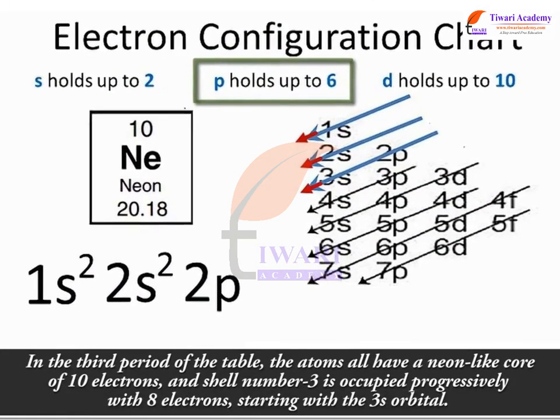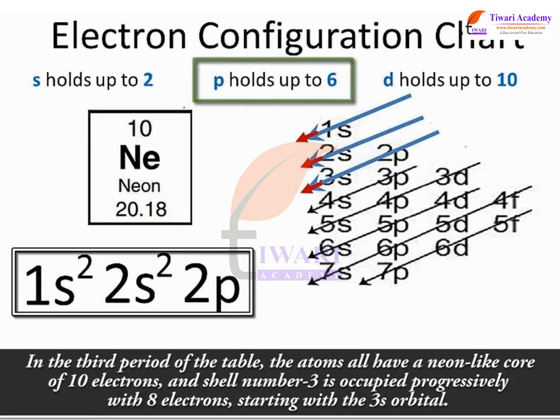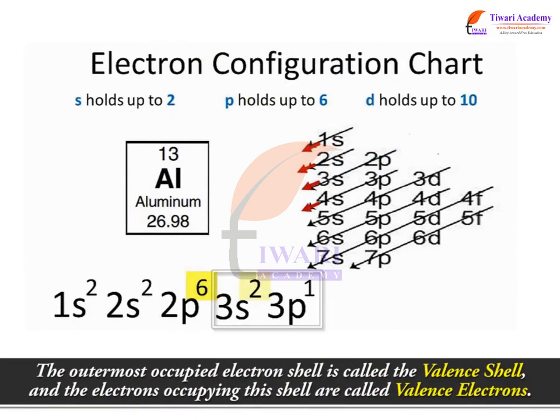In the third period of the table, the atoms all have a neon-like core of 10 electrons and shell number 3 is occupied progressively with 8 electrons, starting with the 3s orbital. The electrons occupying this shell are called valence electrons.